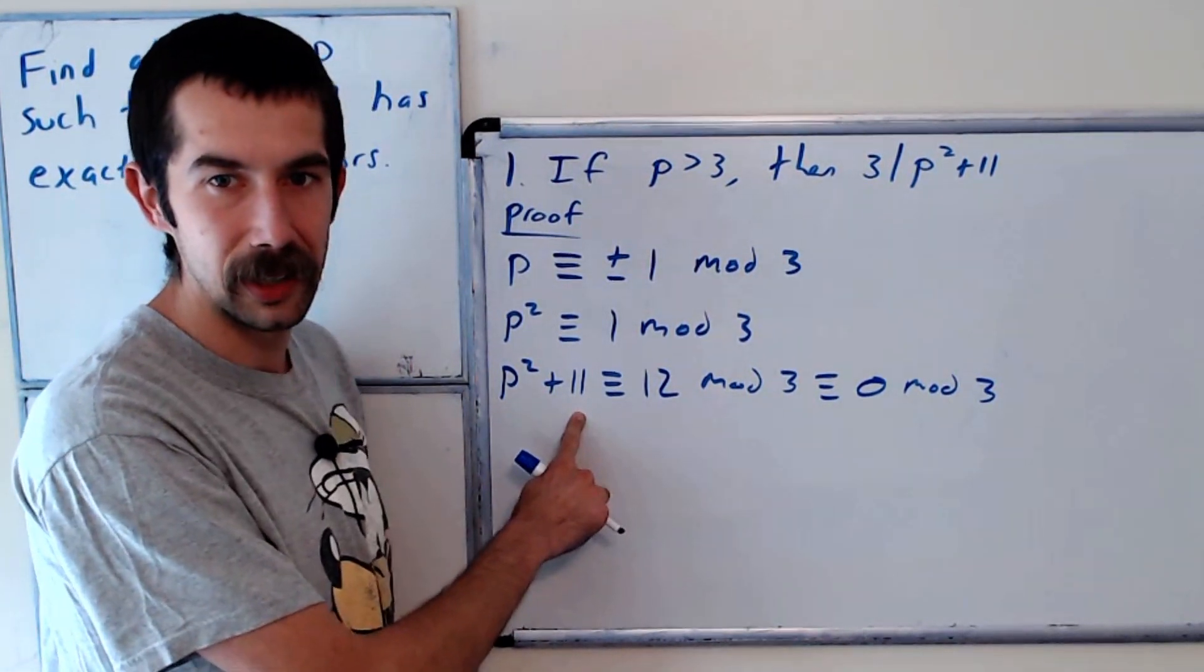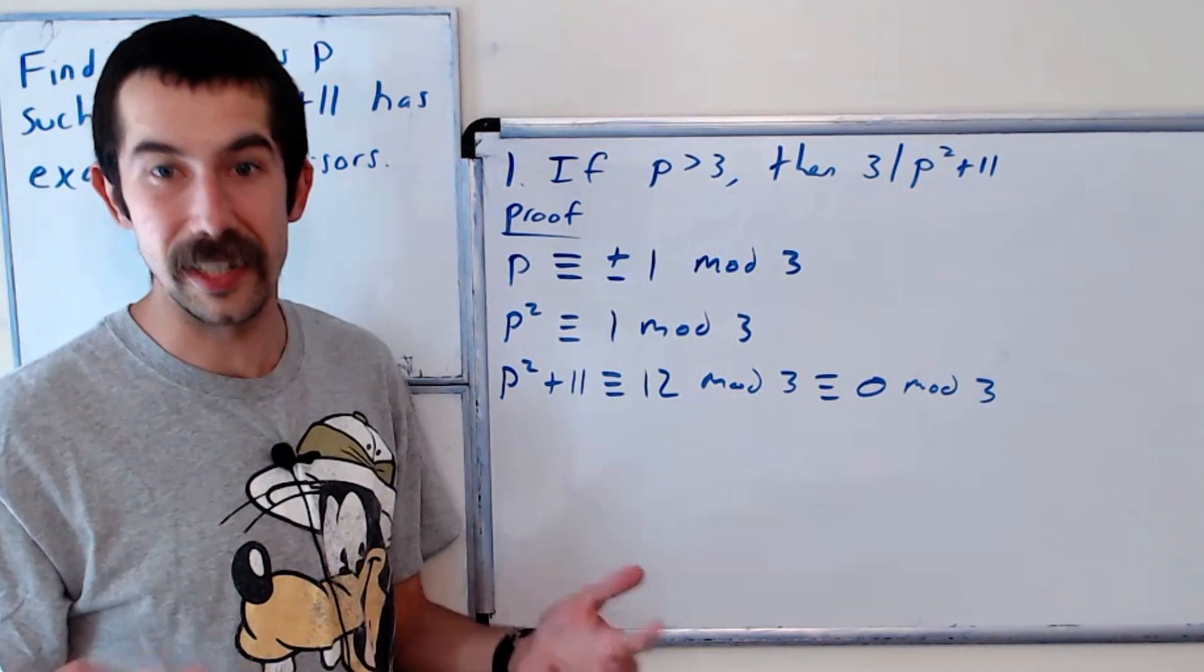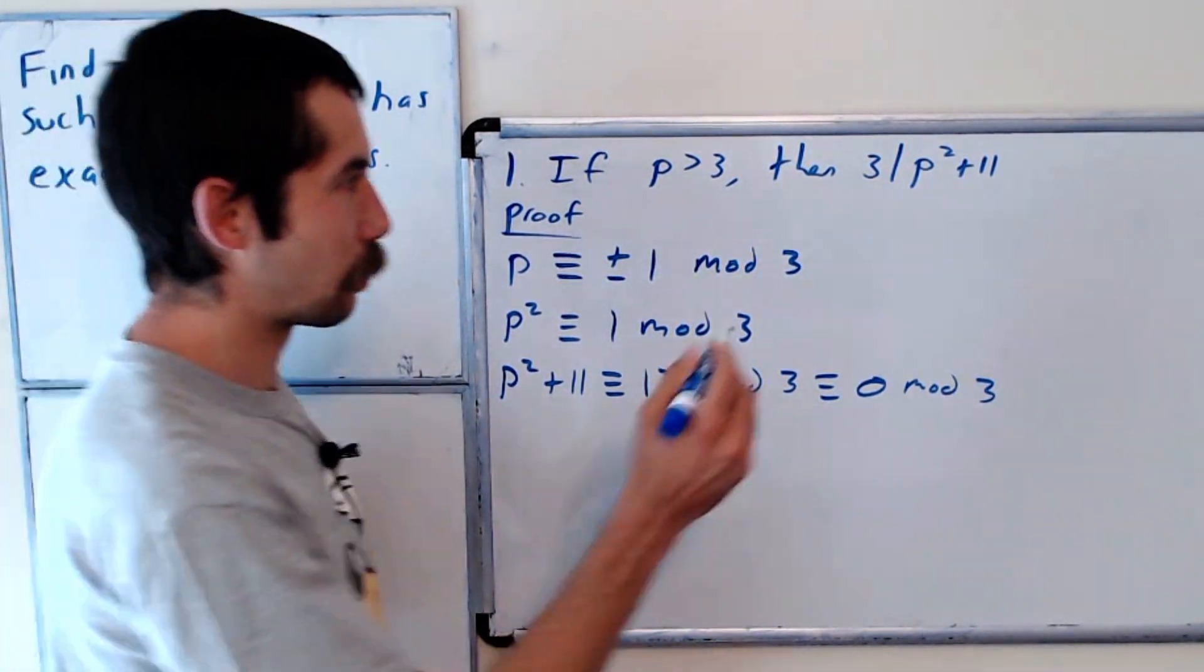Okay, so p squared plus 11 is equal to 0 mod 3, meaning that p squared plus 11 is divisible by 3. Okay, so that's proven.